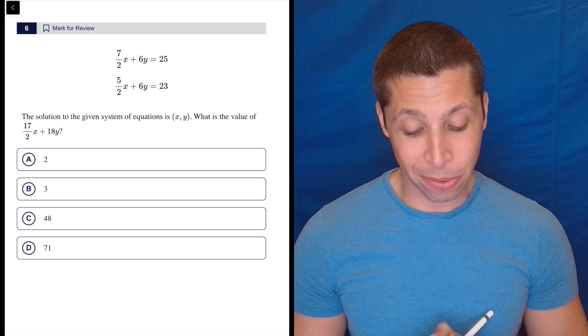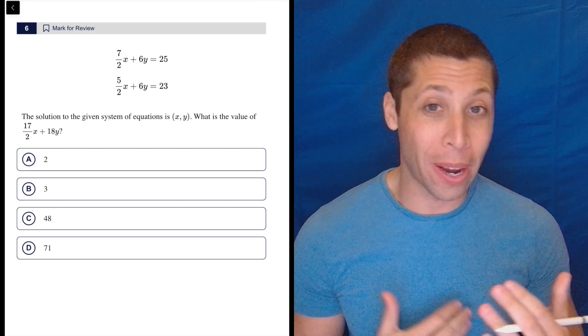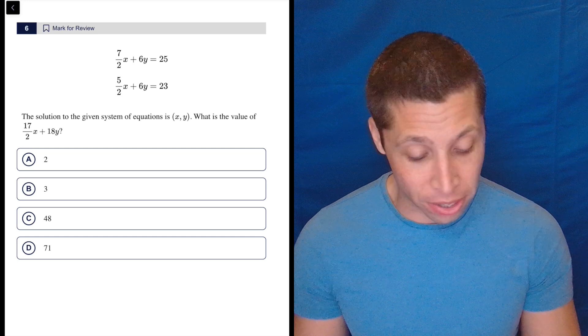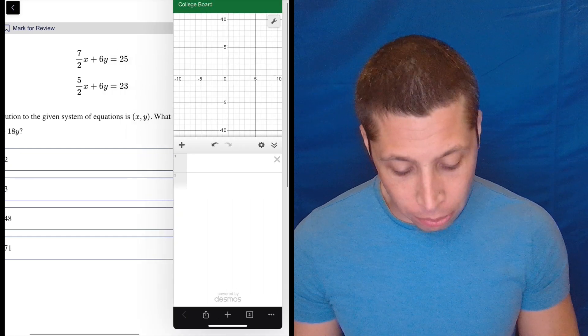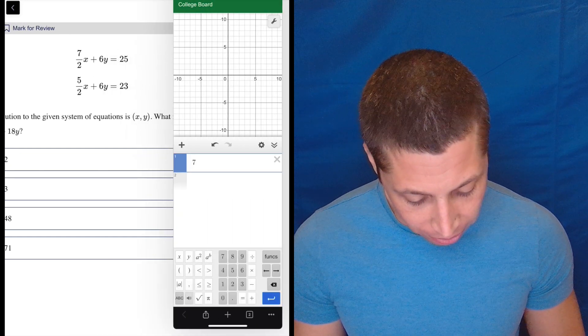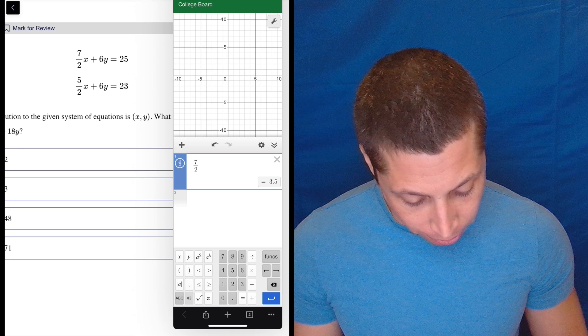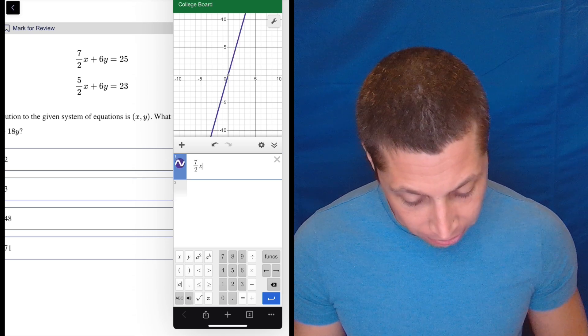My general rule on questions like this, when I have a system of equations and both equations have two variables, is I'm just going to go to Desmos. I really just don't want to take a risk. I know that there are shortcuts. I'll show you some of them, but this feels like the easiest way.